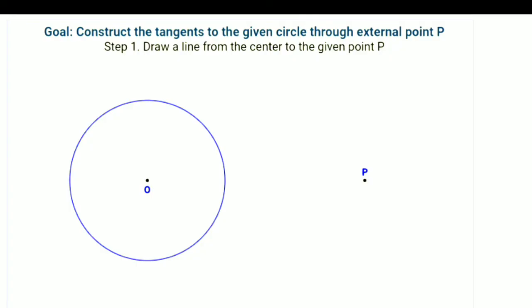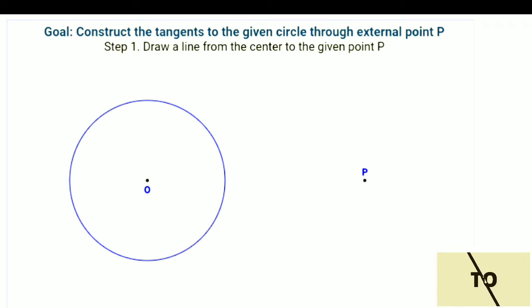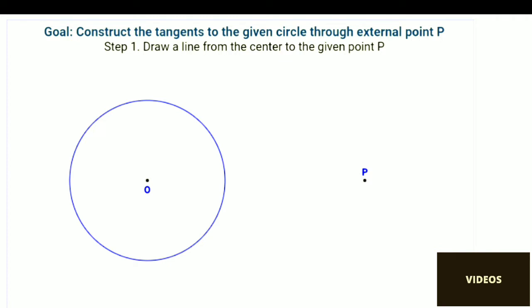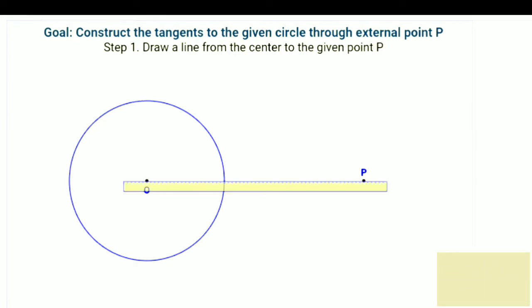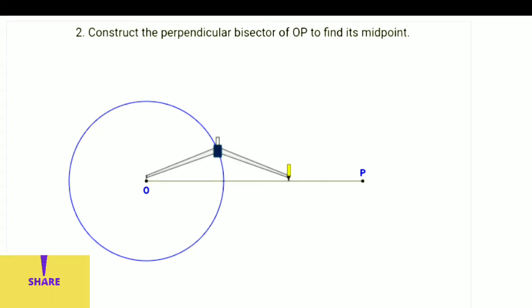Draw a line from the center to the given point B. Construct the perpendicular bisector of OP to find its midpoint.